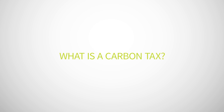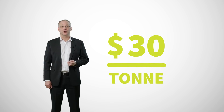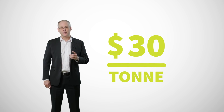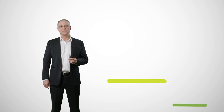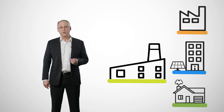A carbon tax sets the price of carbon emissions directly. It applies to different fuels based on their carbon intensity. Anyone who emits greenhouse gases pays that fee to the government. For example, $30 per ton of GHGs. That carbon price incentivizes households and businesses to find ways of doing things to reduce their emissions and to avoid having to pay the tax.